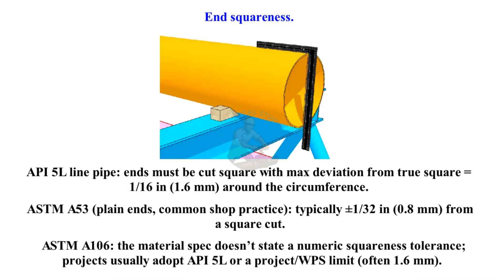ASTM A106: the material specification does not state a numeric squareness tolerance. Projects usually adopt the API 5L limit or a project and WPS limit, often 1.6 millimetres.